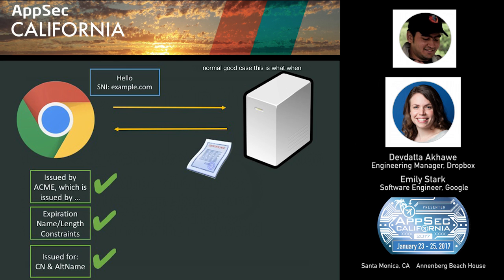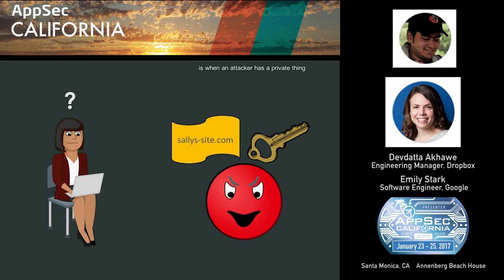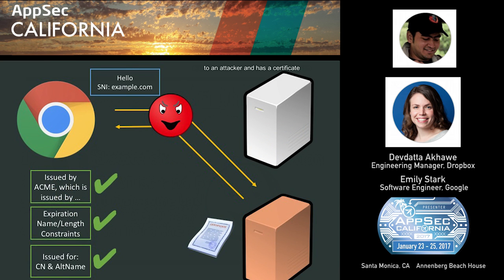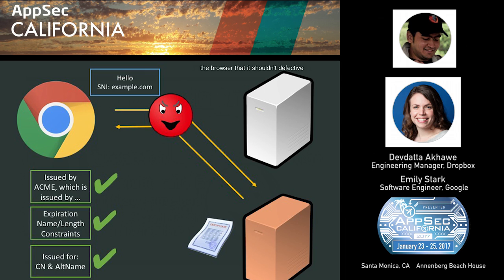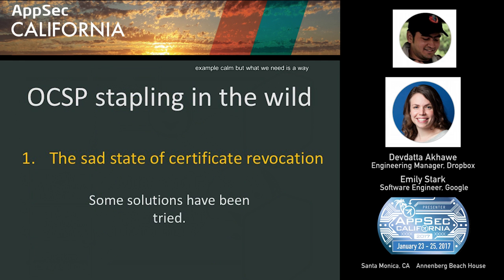That's the normal, good case. But what we're interested in is when an attacker has a private key for a certificate for the domain. The client is not actually talking to the real example.com — it's talking to an attacker who has a certificate claiming to be example.com. The problem is that everything looks exactly the same to the browser. The attacker provides a certificate proving it is example.com, and certificate verification checks pass. In this basic TLS setup, we have no way to communicate to the browser that it shouldn't accept this certificate. What we need is a way to communicate that this certificate has been revoked.